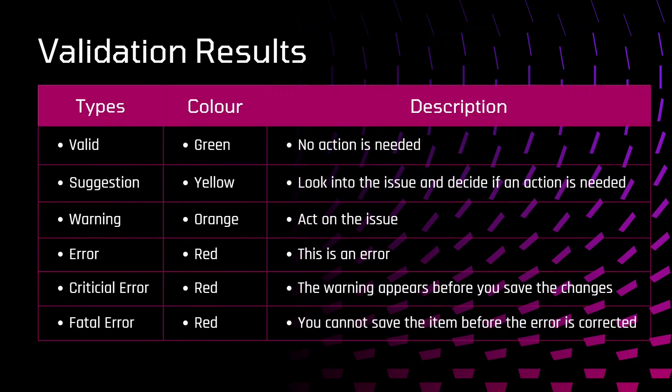These are the validation results that we get. In terms of types: first, we have Valid — it will have a green color and no action is required. Second is Suggestion — it will be denoted in yellow color. Look into the issue and decide if any action needs to be taken.